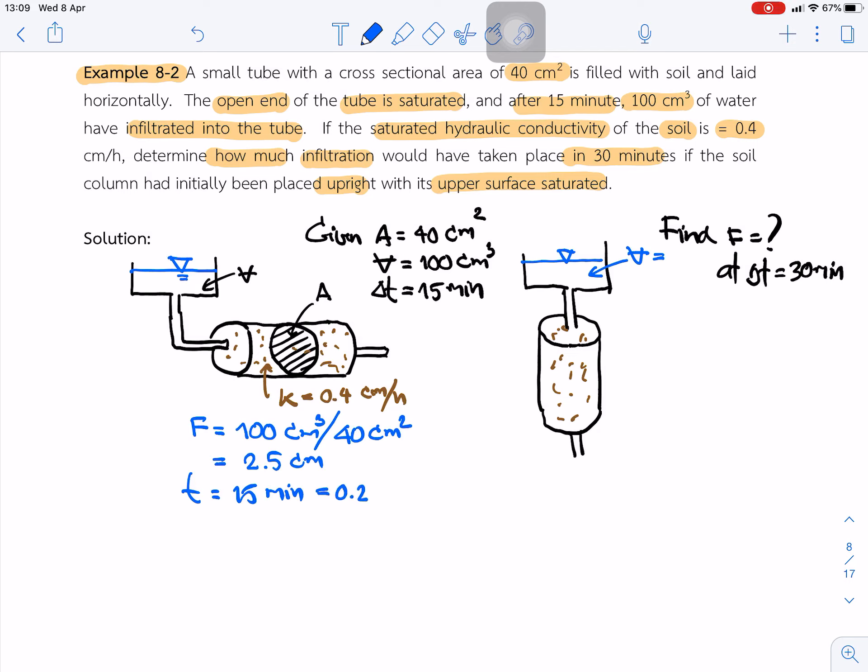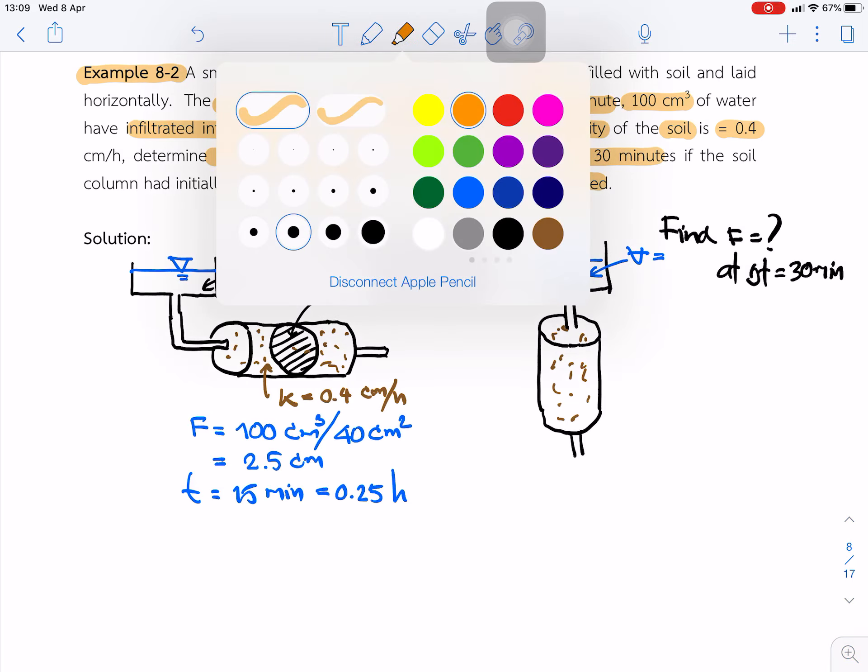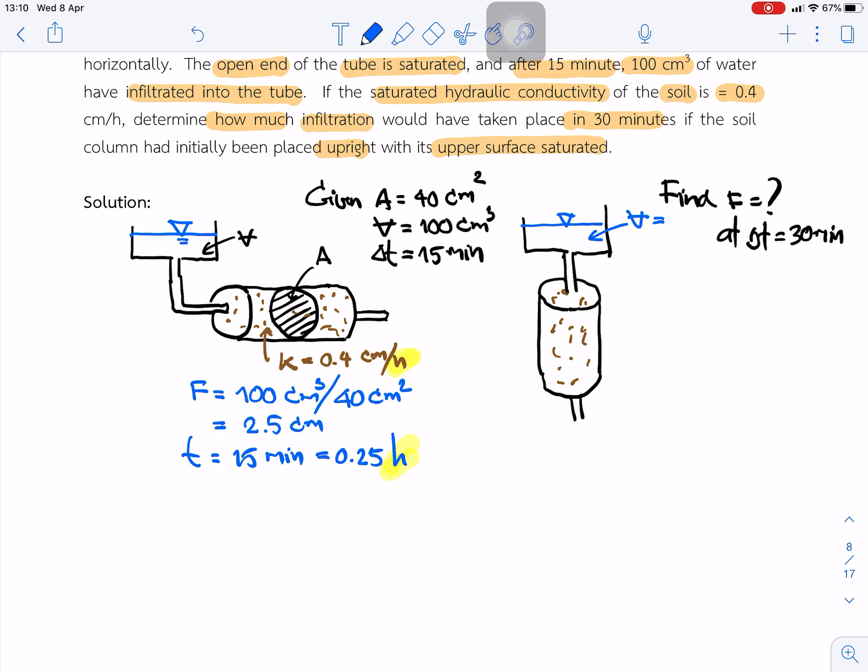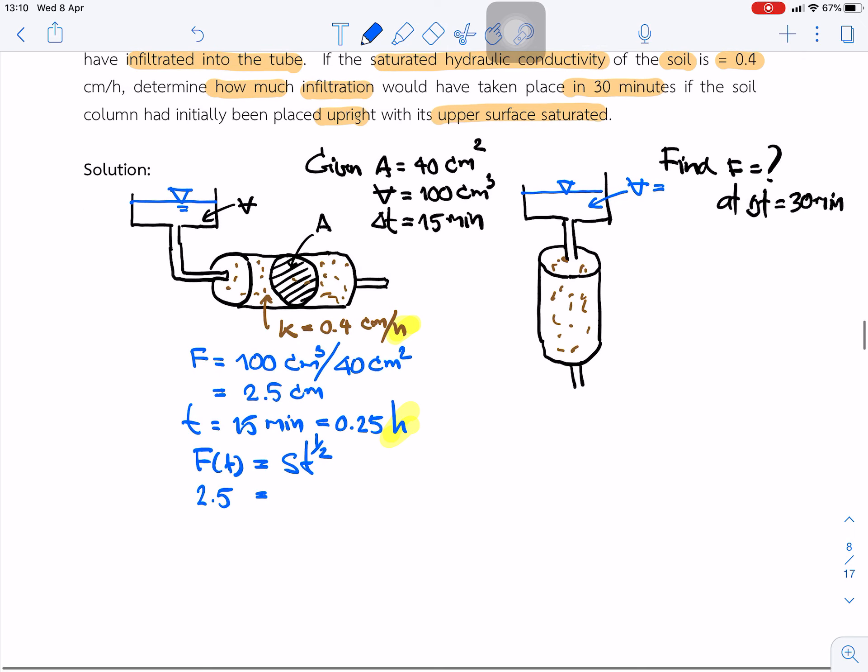And t equals 15 minutes, so we convert to hours because we want the unit the same as the hydraulic conductivity. We have used the one-term equation S times t to the power half, and we substitute the cumulative depth 2.5 centimeters, and S is unknown.